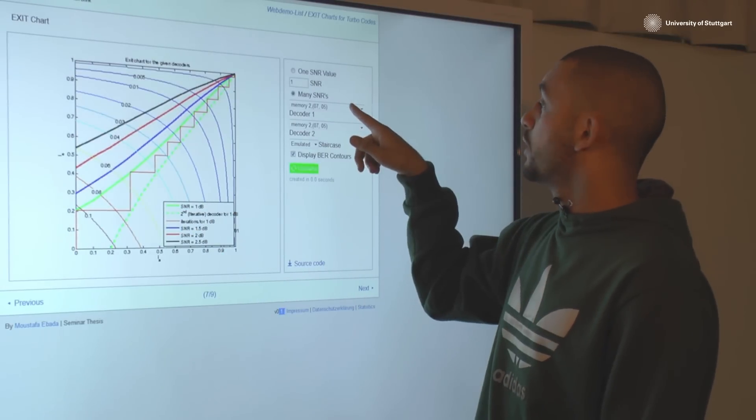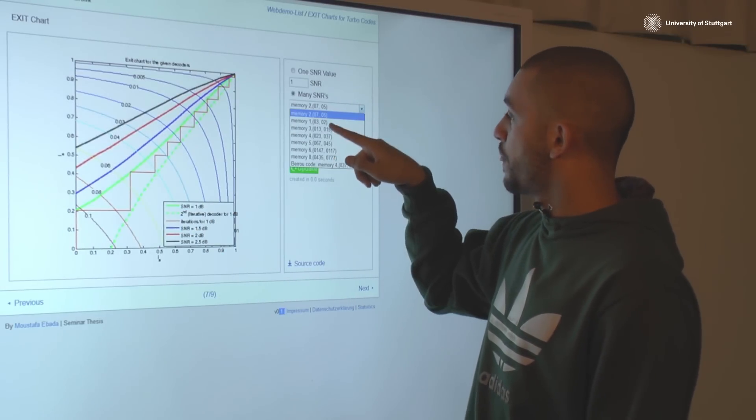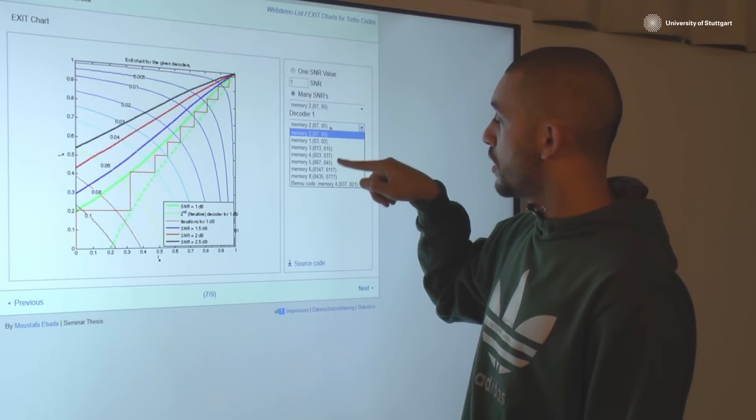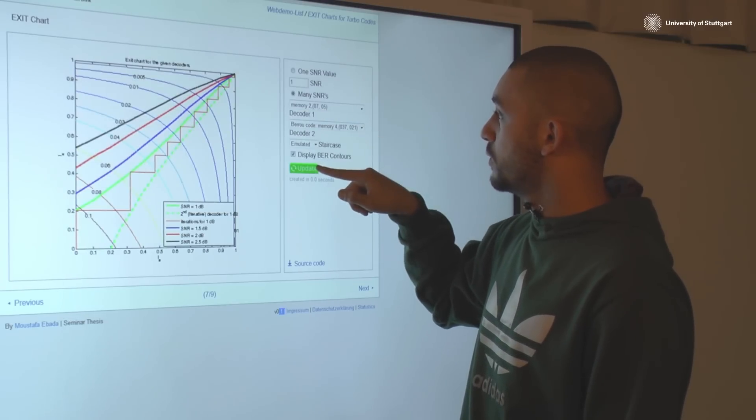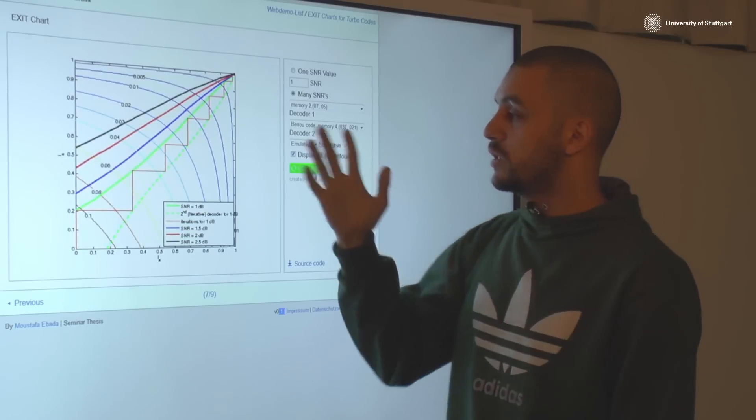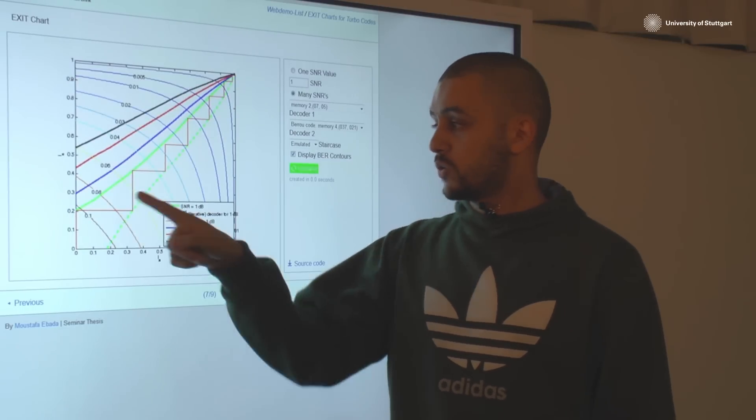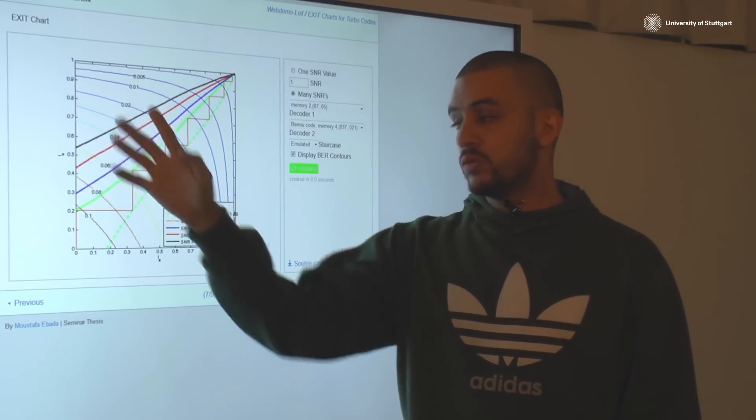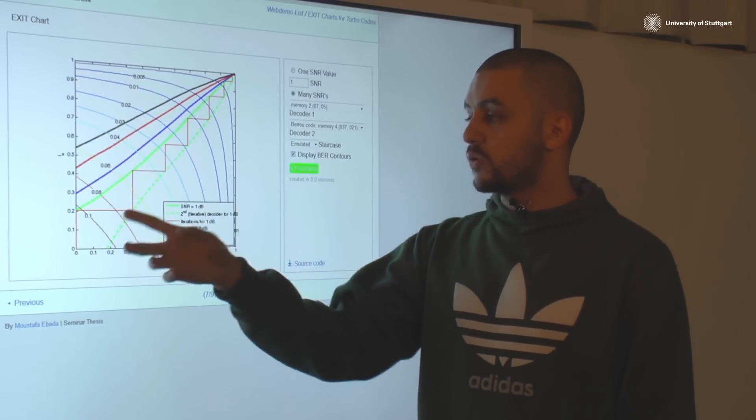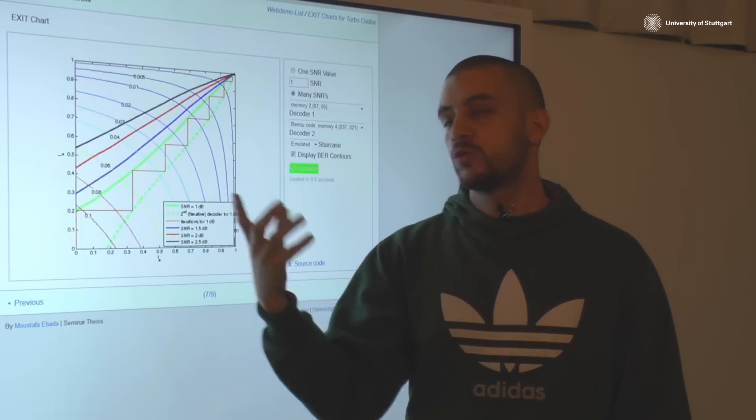Also we can make some fun here. We can choose the 2 versus the Bureau code. Here is the 2 versus the Bureau code. These are for the memory element 2 and this is for the Bureau code. You could see the behavior, the convergence is much better.